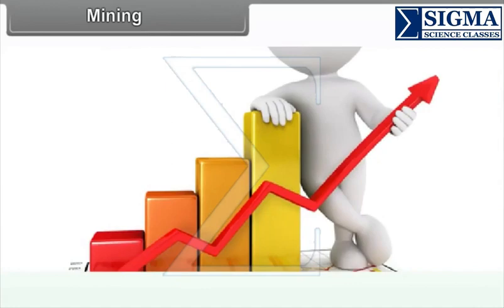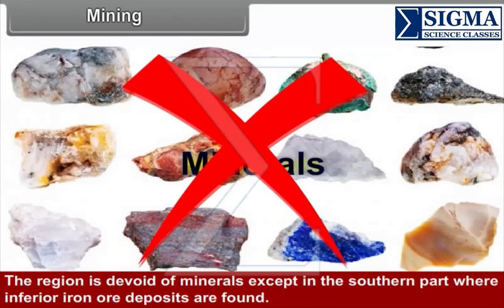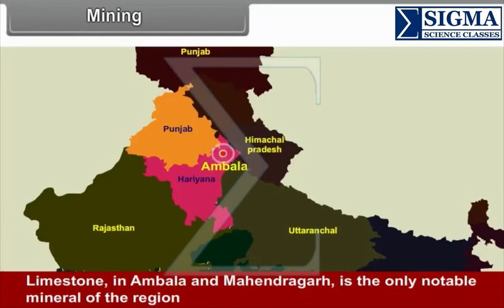Mining: The region is devoid of minerals except in the southern part where inferior iron ore deposits are found. Limestone in Ambala and Mahendragarh is the only notable mineral of the region.